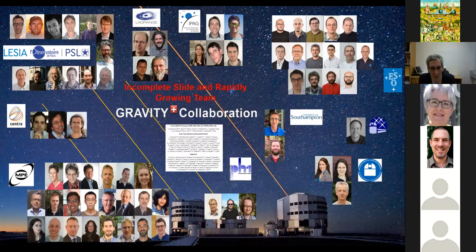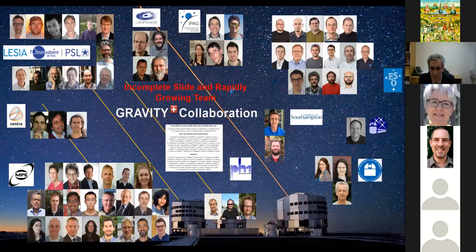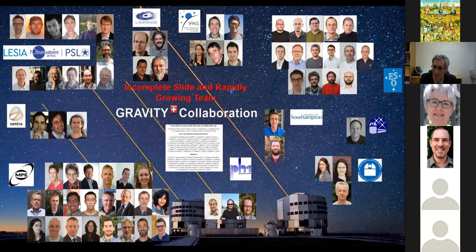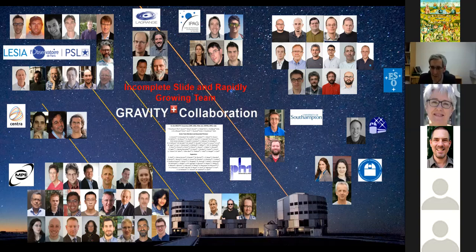And so the gravity collaboration. So we are six institutes in Europe, Portugal, Lisbon, Porto, then in France, in Grenoble, Paris, and then here in Germany, in Cologne, and here at MPE. And together with ESO. And so you see me about a good hundred or so scientists and engineers who have made this gravity experiment. And so, but we are going on. And so what you now see is, is the new setup for the upgrade we want to do, which is called gravity plus. So we are setting up a new collaboration, which is to a large part of the same institutes involved. But we also have new partners.